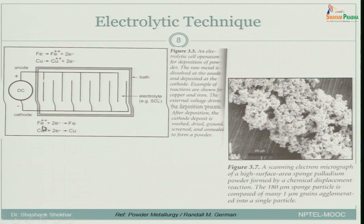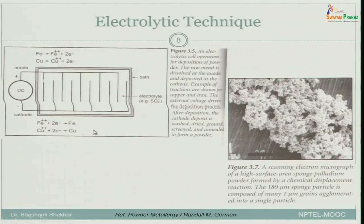A few more examples: Fe²⁺ going into Fe and Cu²⁺ going into Cu — these are the reactions taking place at the cathode, meaning they are getting deposited as solid form. On the anode side, bulk metal like iron or copper dissolves into ionic form, travels through the electrolyte between the two plates, and gets deposited onto the cathode. This is a very simple technique to understand, although the setup may be a little more involved.